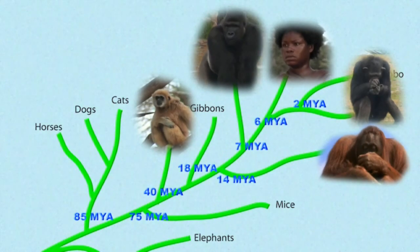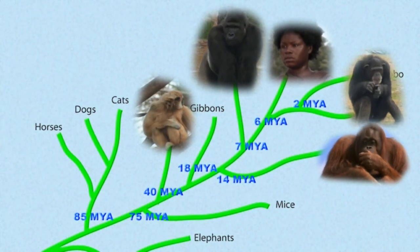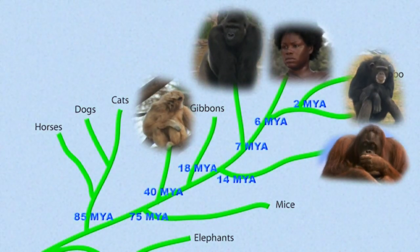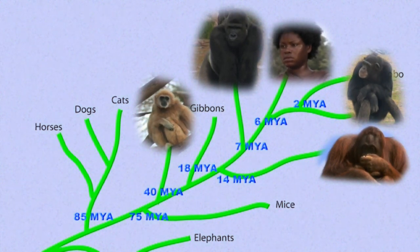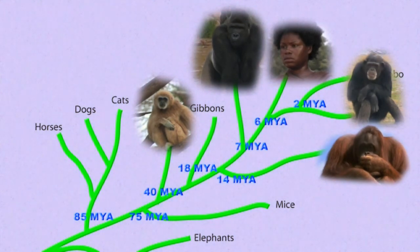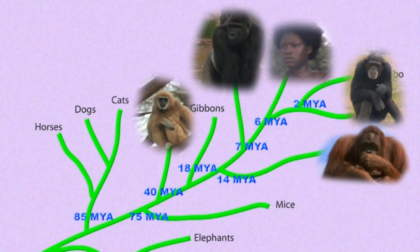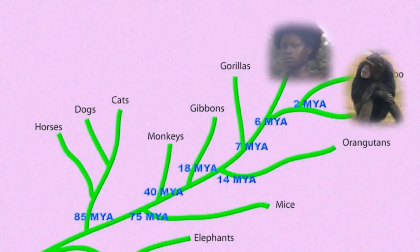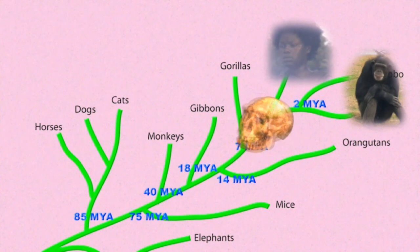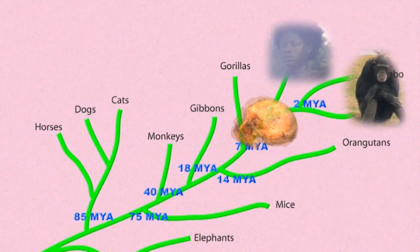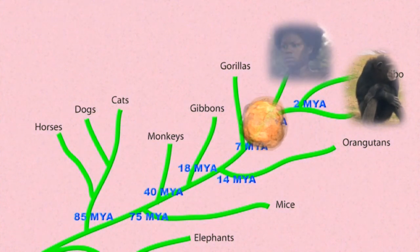A common misconception is that some modern species are descended from other modern species. This is rarely the case. Instead, closely related modern species evolved from a common ancestor — neither one nor the other. Humans did not come from chimps. Both humans and chimps came from a creature that had more primitive features than either modern humans or modern chimps.